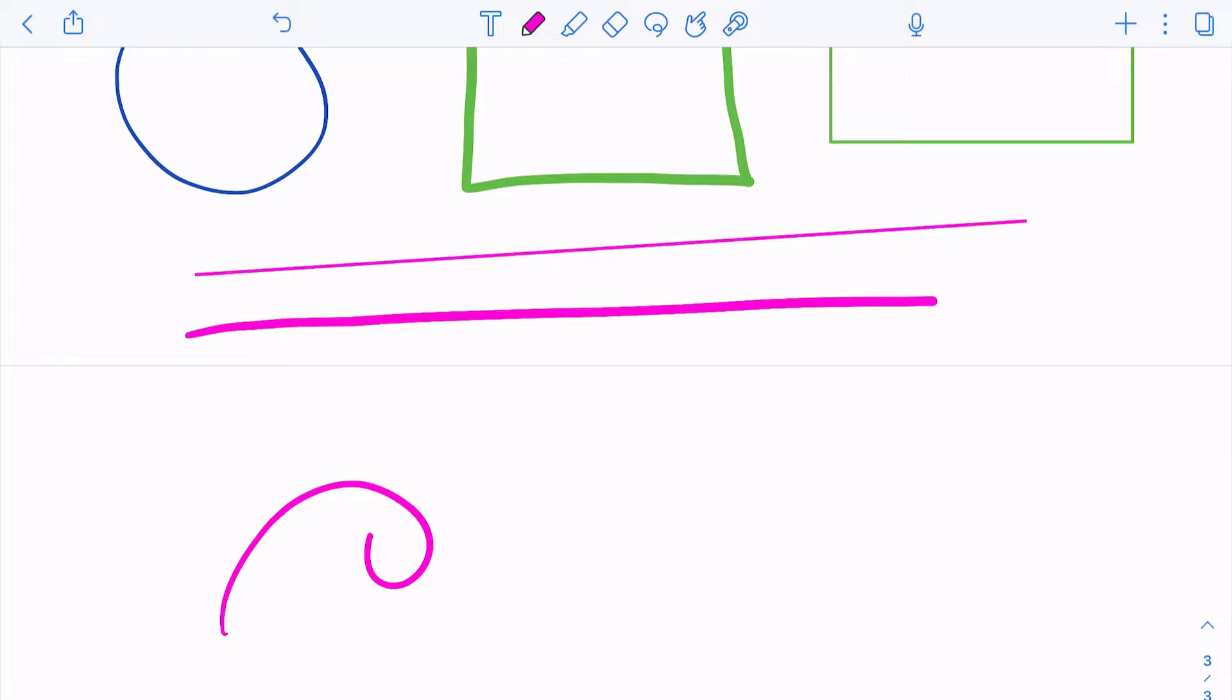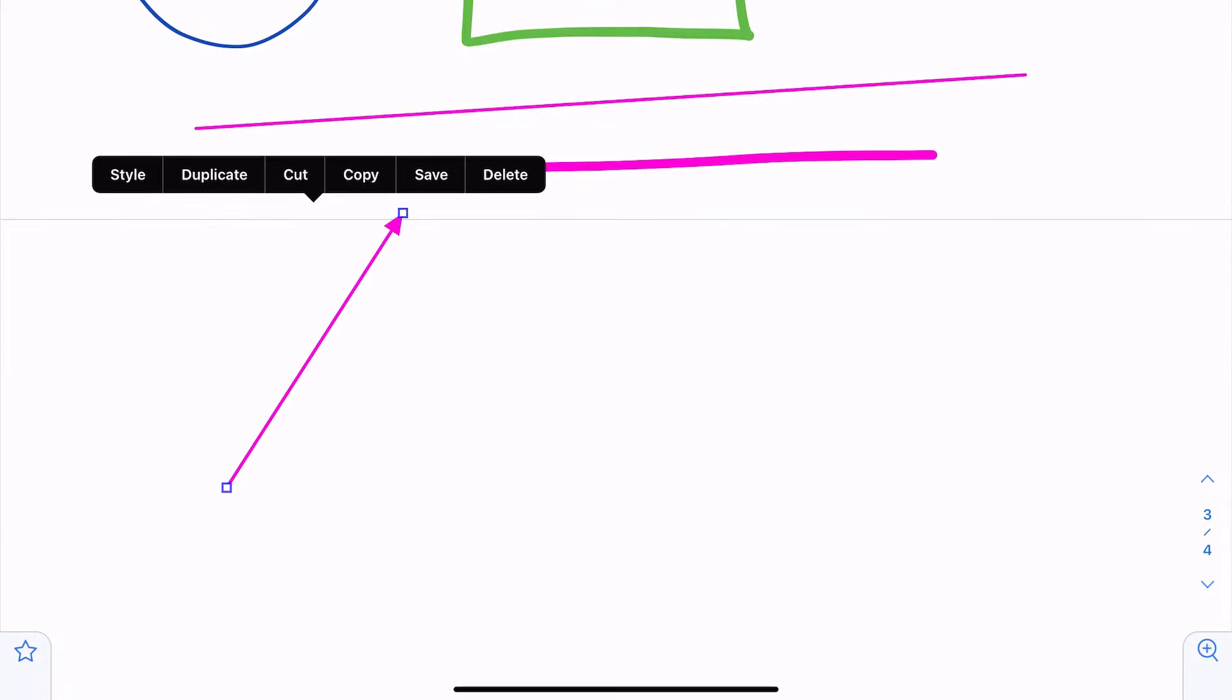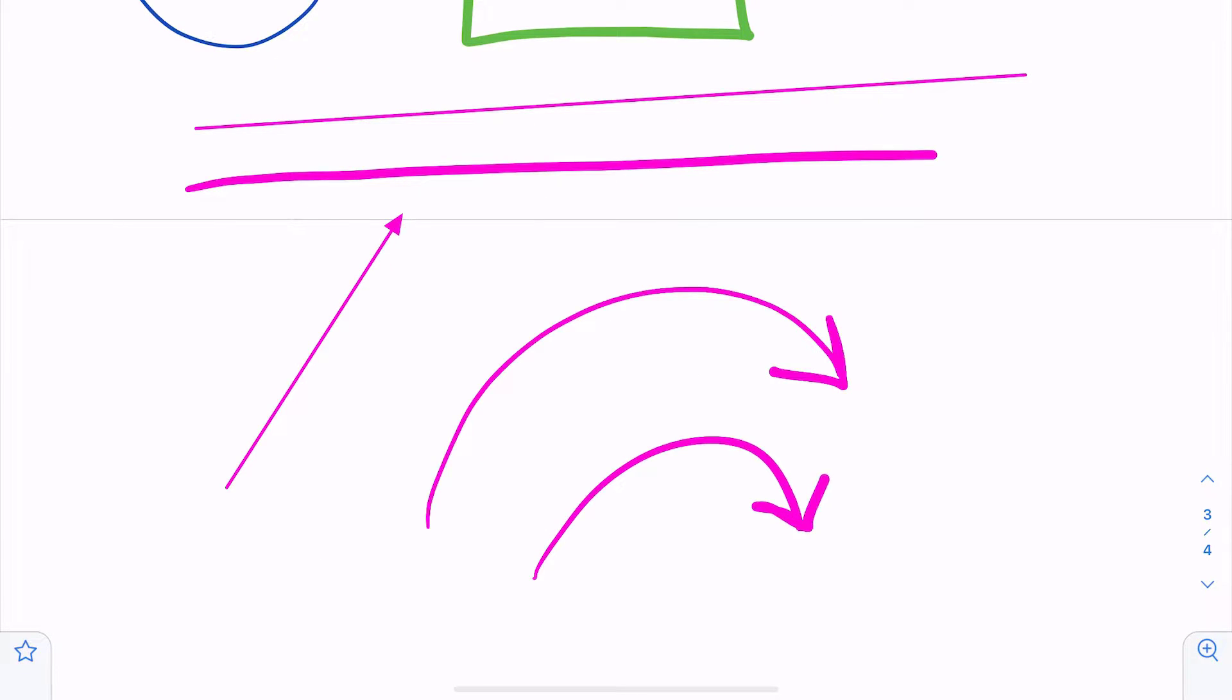And then you also have auto arrows. So I'm going to draw a shape and at the end I'm going to draw an arrow and then hold. Notice it made it into a straight line, it doesn't keep that curve. And then if I try to do an actual curved arrow, now I've got an actual curve that I can maneuver.